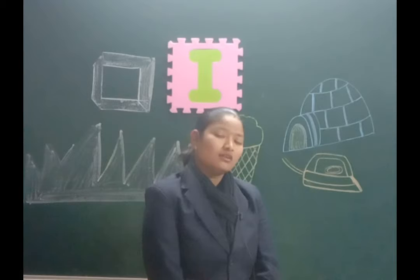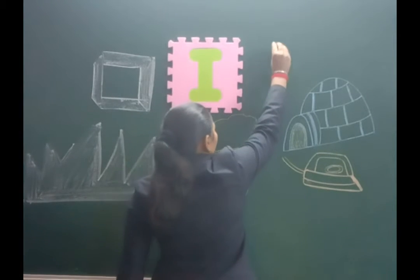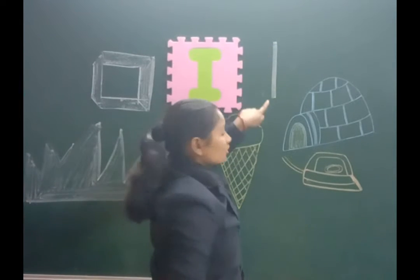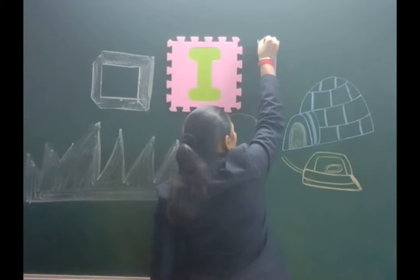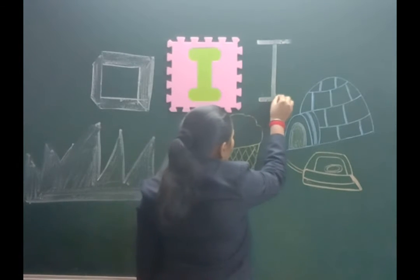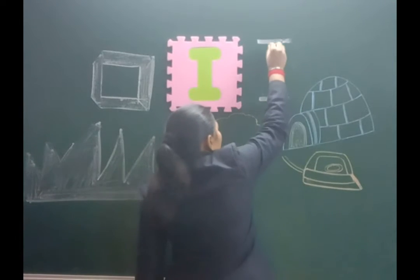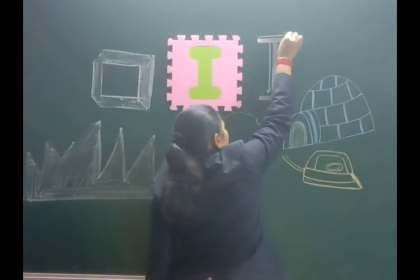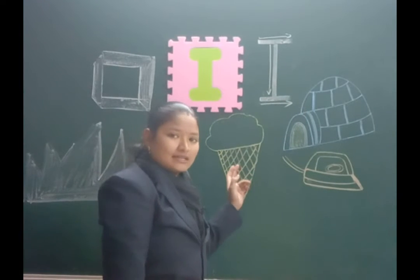Now we will learn how to write letter I. First we will make one standing line, top to bottom. Then at the top, one slanting line, and then at the bottom, one more slanting line. It is letter I.